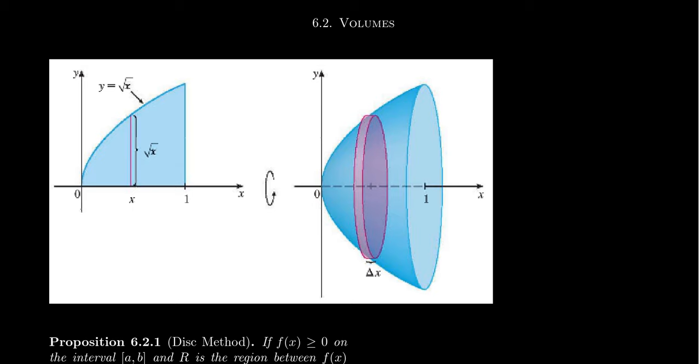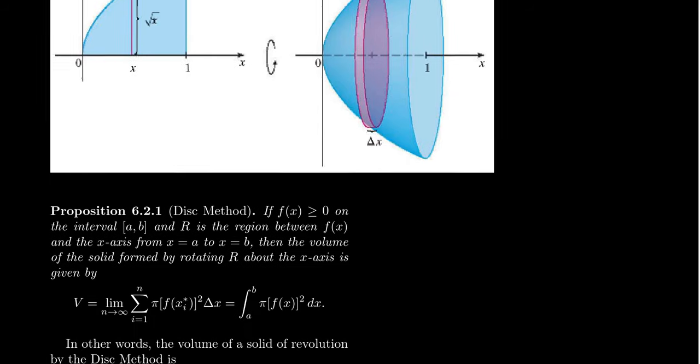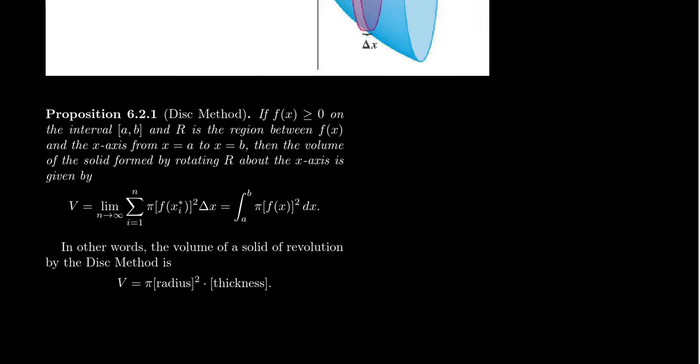These ideas of solids of revolution. Could we take a two-dimensional region, spin it around the x-axis or the y-axis, and form these solids of revolution. This illustration is an example of the more general principle that we want to explore. Let me bring up the proposition and give some explanation onto what we mean by this so-called disk method.